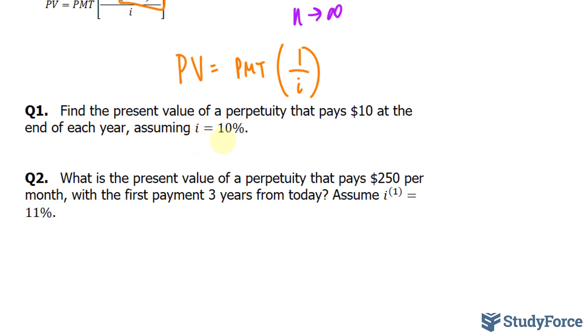And so, we don't have to do anything with i. We can simply change it into its decimal form and use the formula that we wrote up here. So, the present value is equal to the payments of $10 at the end of each year, and that's being multiplied to 1 over 0.1.